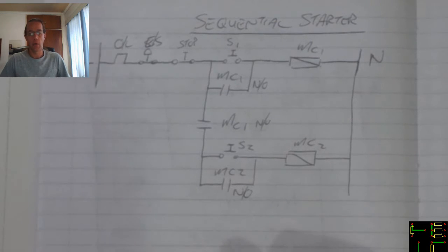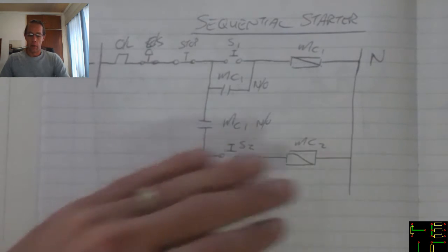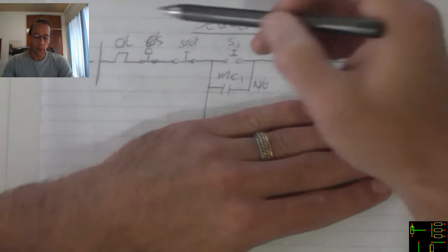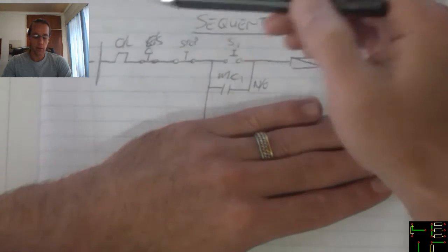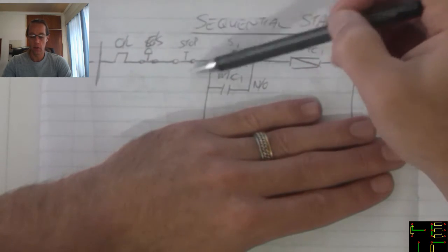Sequential starters are sometimes required in scenarios where we start one device before we can start a second device. We're starting off with a normal direct online starter, overload, emergency stop and the stop.